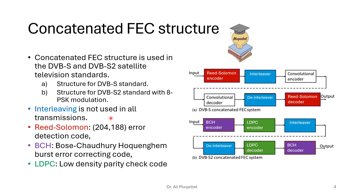In the new standard, we use the Reed-Solomon code — specifically the 204 to 188 error detection code, shown in red — and the BCH code shown in purple. BCH stands for Bose-Chaudhuri-Hocquenghem and is used for burst error correction. In the new standard, these codes are replaced with BCH and also with LDPC code instead of conventional convolutional codes. LDPC stands for low density parity check codes. As you can see, with the development of coding techniques, things become possible that were not possible before. Thank you very much for listening — we'll see you in coming videos.